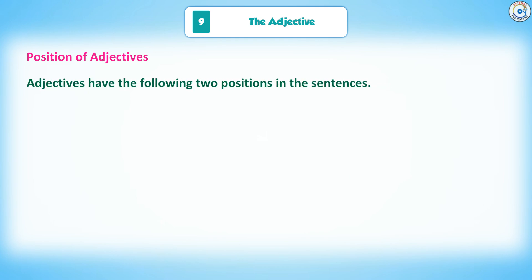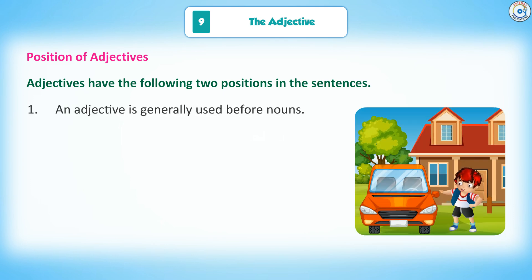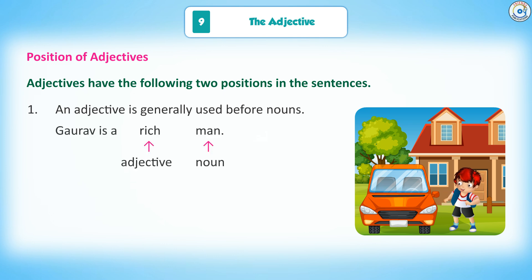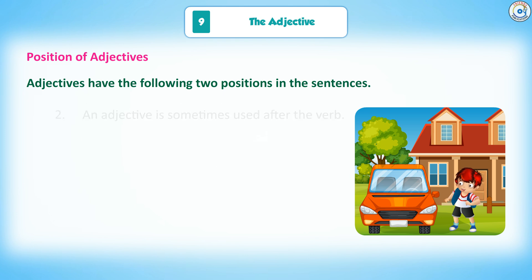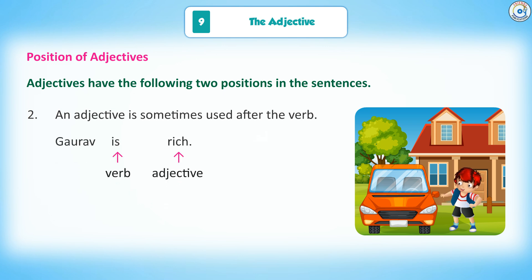Position of adjectives: Adjectives have two positions in sentences. 1. An adjective is generally used before a noun — for example, Gaurav is a rich (adjective) man (noun). 2. An adjective is sometimes used after the verb — for example, Gaurav is (verb) rich (adjective).